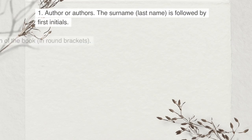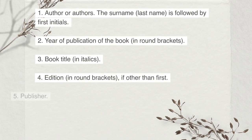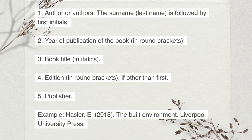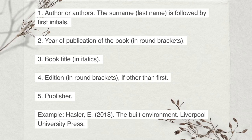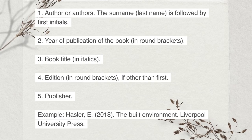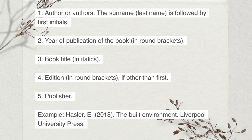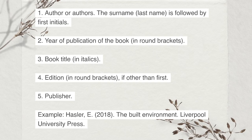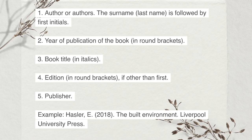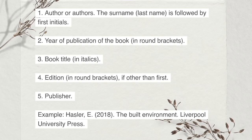A basic reference list entry for a book retrieved from a library database in APA must include: 1. Author or authors — the surname is followed by first initials. 2. Year of publication of the book, in round brackets. 3. Book title, in italics. 4. Edition, in round brackets. 5. Publisher. Example: Hasler, E. (2018). The Built Environment. Liverpool University Press.